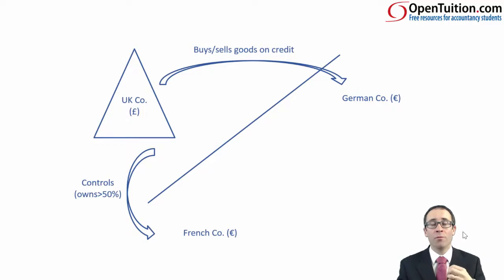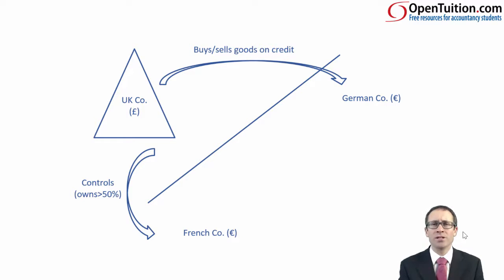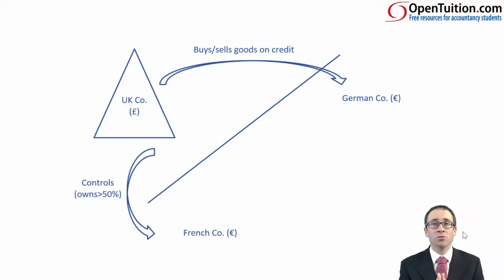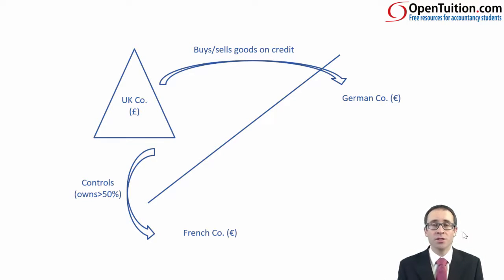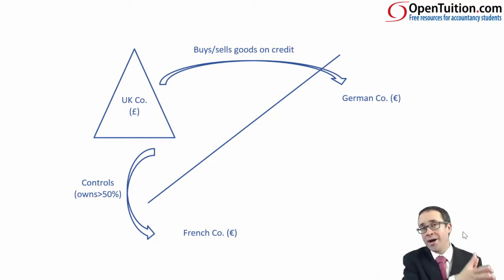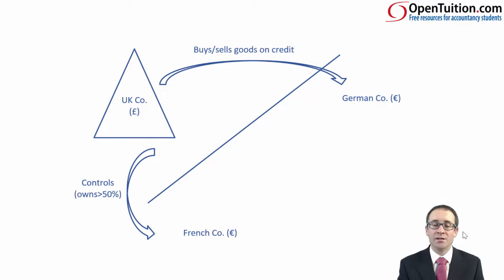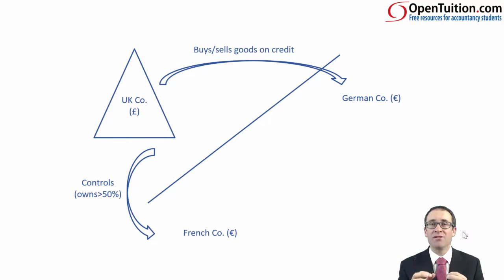So, we're going to have to look at a bit of translation prior to consolidation. Then we'll need to look at how to calculate specific overseas balances, such as goodwill and non-controlling interest, because don't forget the non-controlling interest own their share of that overseas subsidiary. We need to know what that share is worth before we convert it into pounds sterling — or the currency that the group presents the financial statements in. It's all about translation into the group presentation currency, and then thinking about specific balances.